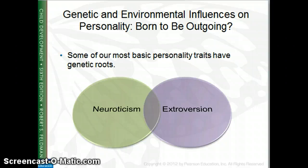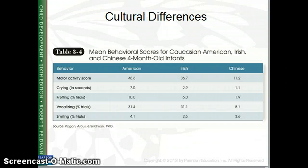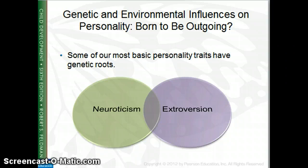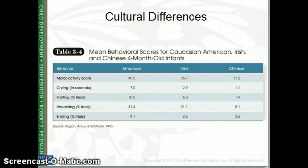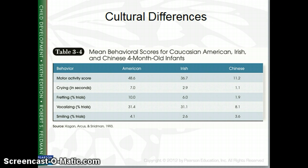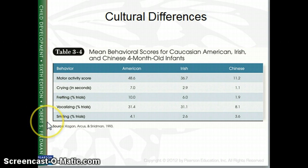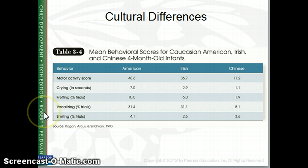IQ is similar based on biology, and research has also found that how neurotic we are, how much of an introvert or extrovert we are, and how social we are tends to have some biological impact. Looking at American, Irish, and Chinese babies and comparing their infant behaviors — motor activity, crying, fretting, vocalizing, and smiling — one of the things they found was strong correlations based on culture.